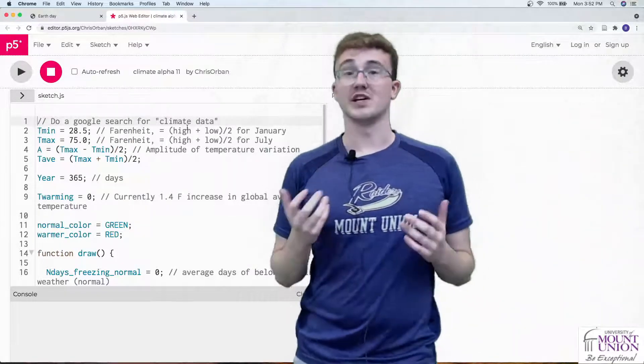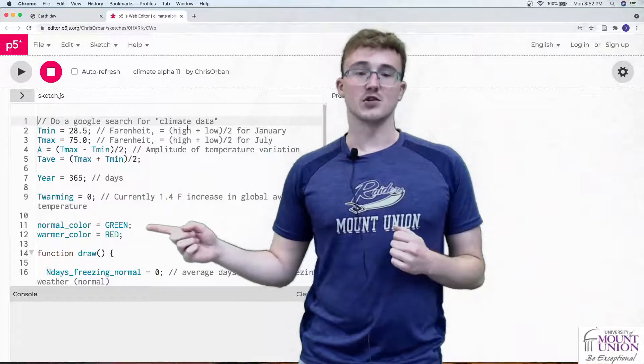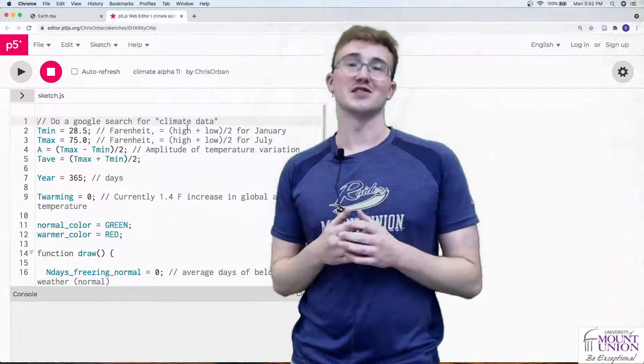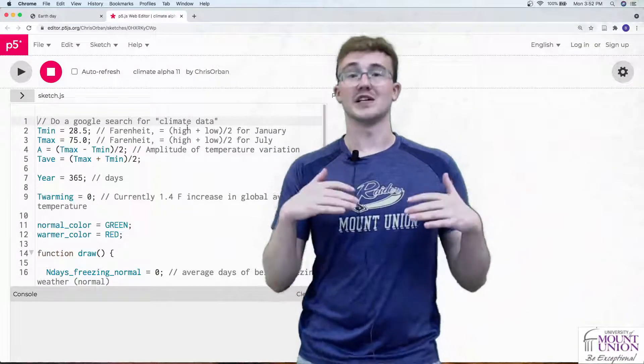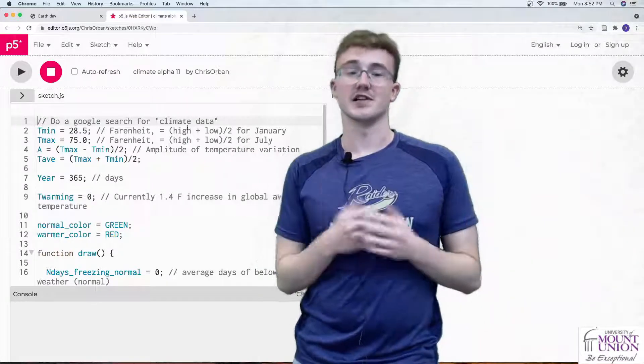Normal_color and warmer_color refer to the colors of the graphs we're making. Normal_color is green for our baseline, and warmer_color is red to show it increasing over time.